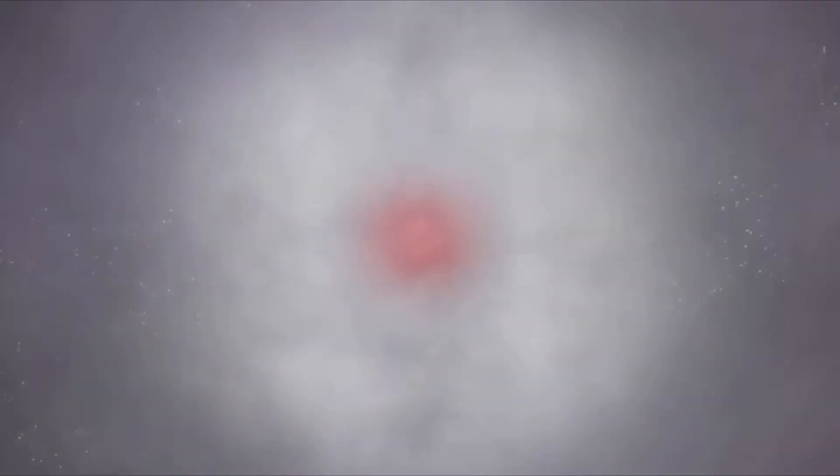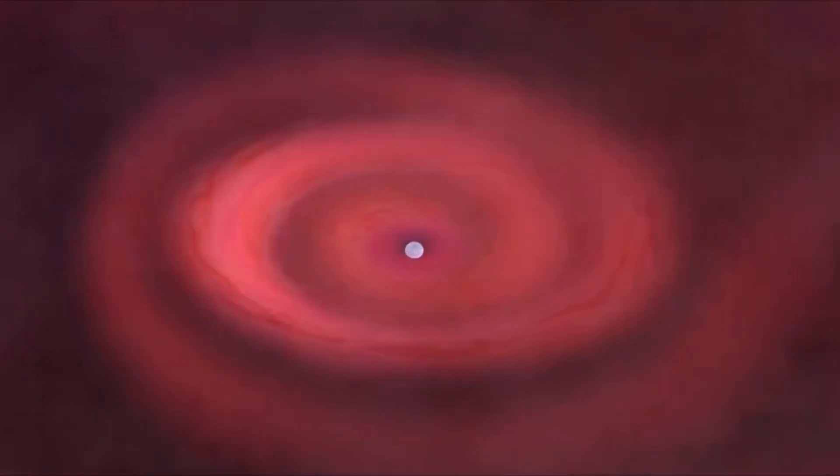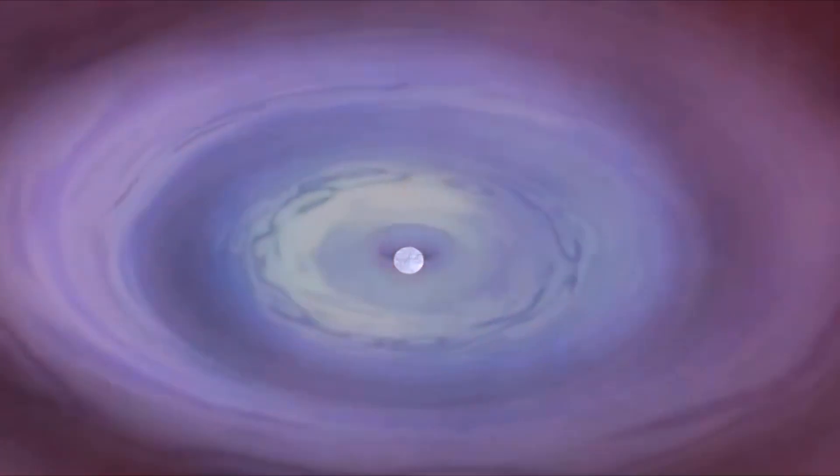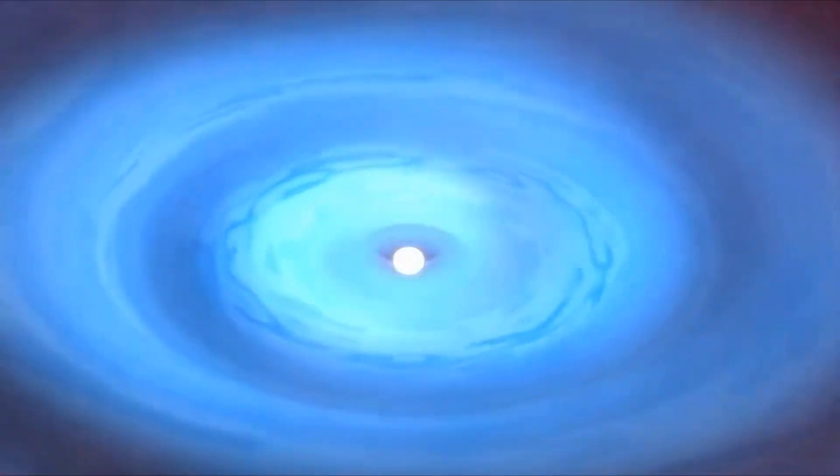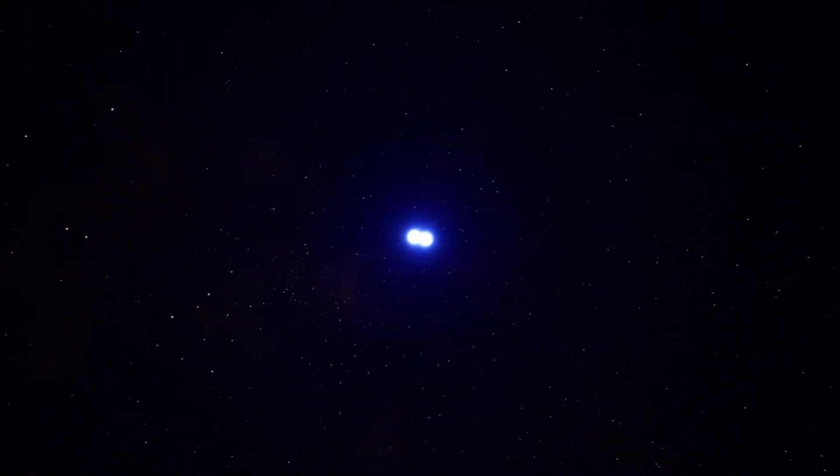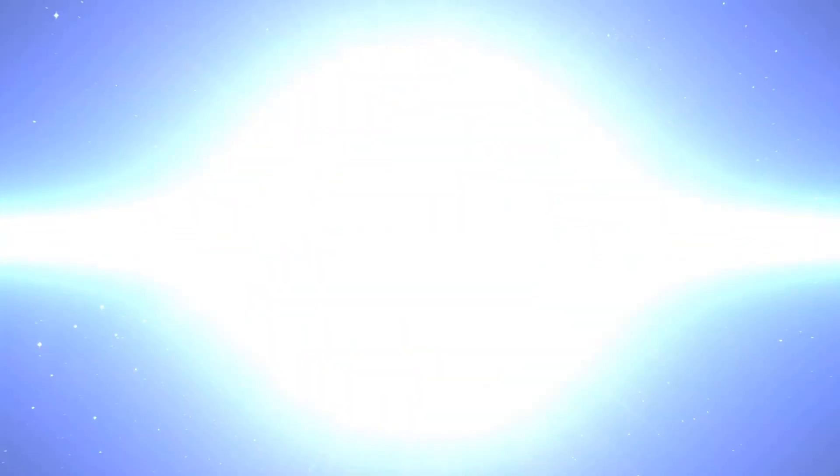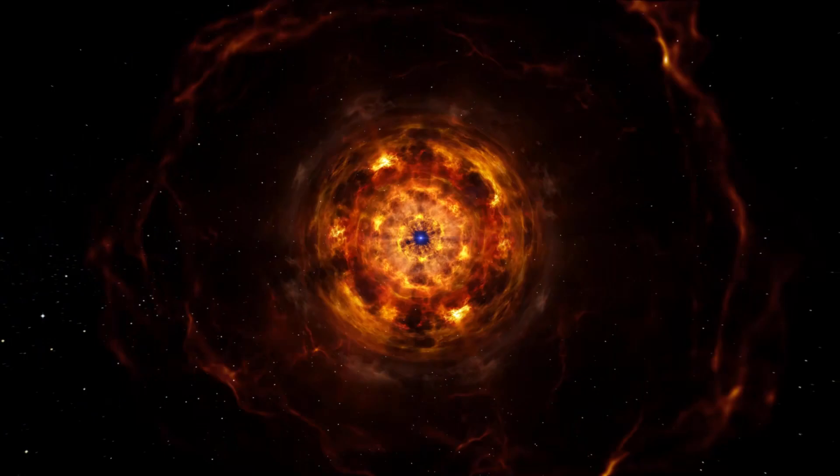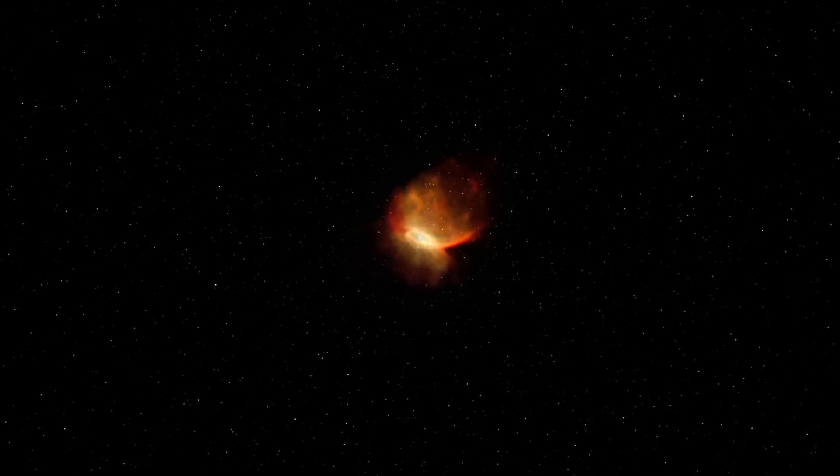The discovery provides crucial evidence supporting the theory that some massive stars can collapse directly into black holes, explaining the mysterious disappearance of these stars from our observations. Typically, when a star undergoes a supernova, it leaves behind remnants such as a black hole or neutron star, accompanied by a supernova remnant consisting of gas and debris that can linger for thousands of years.